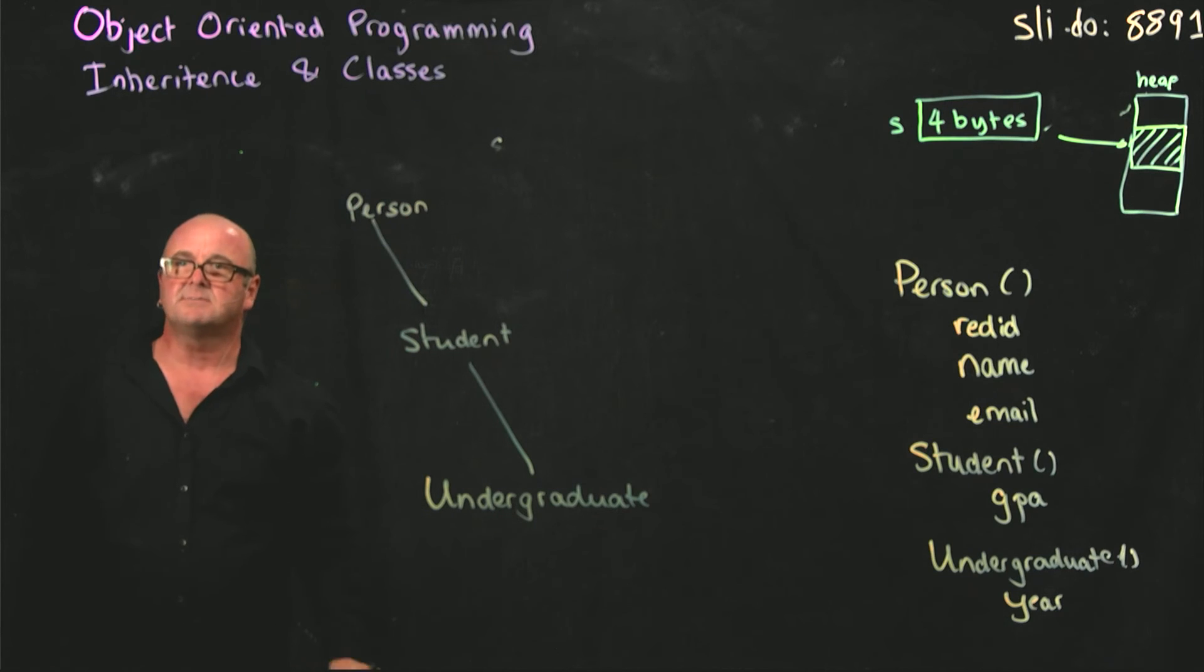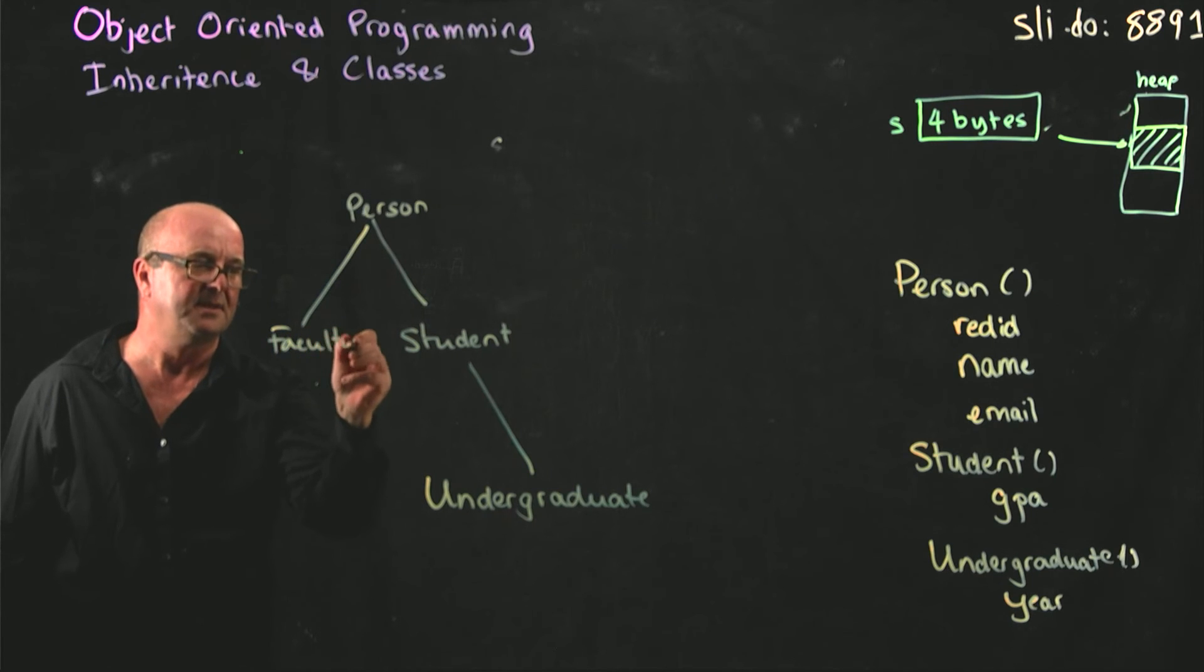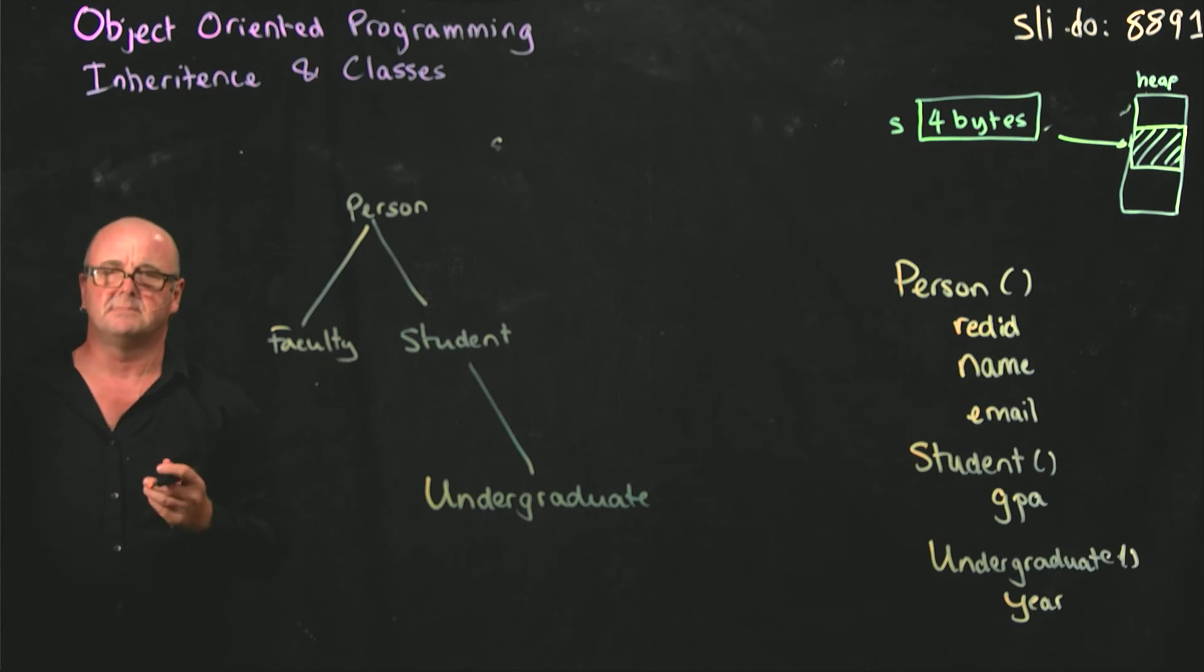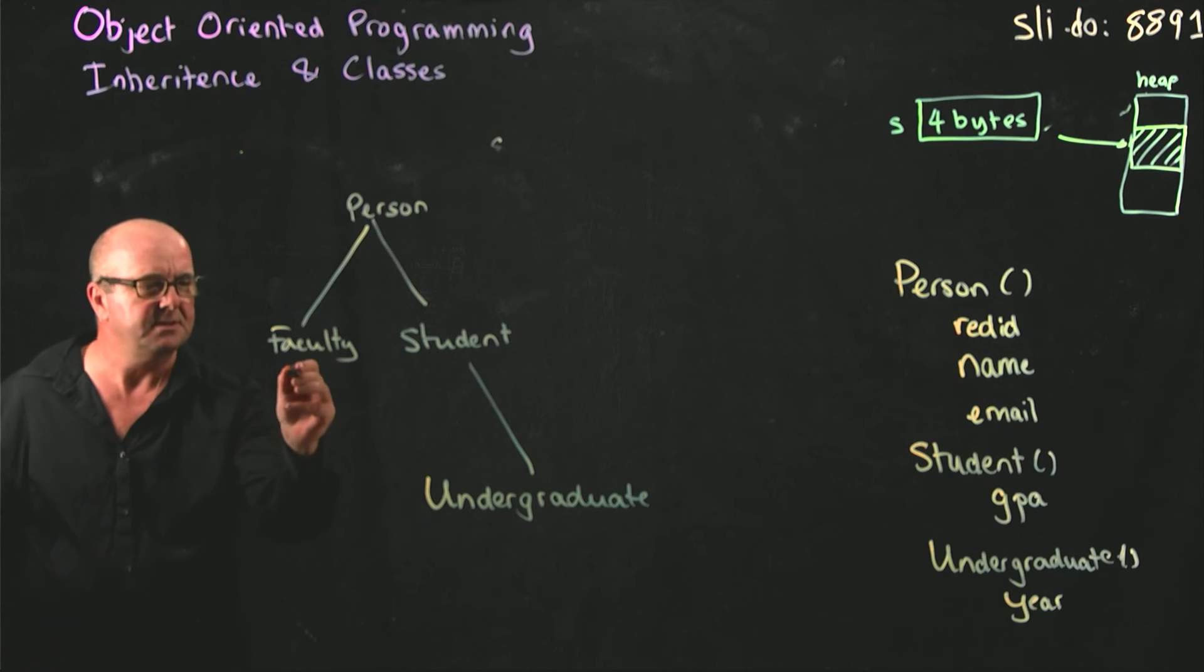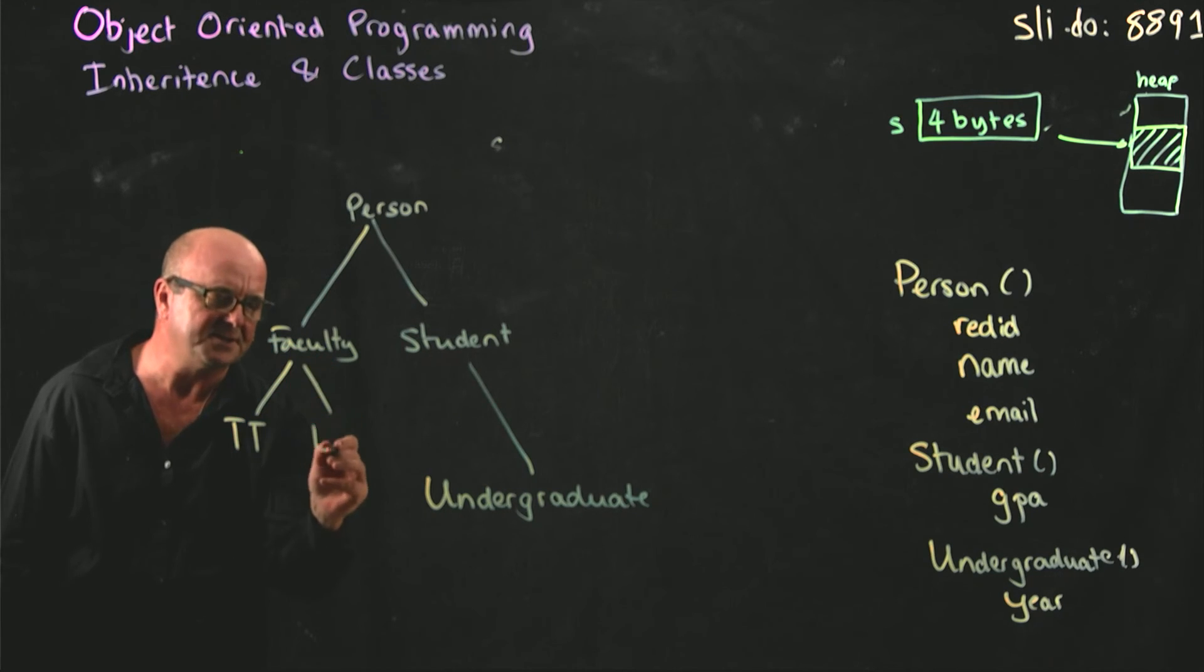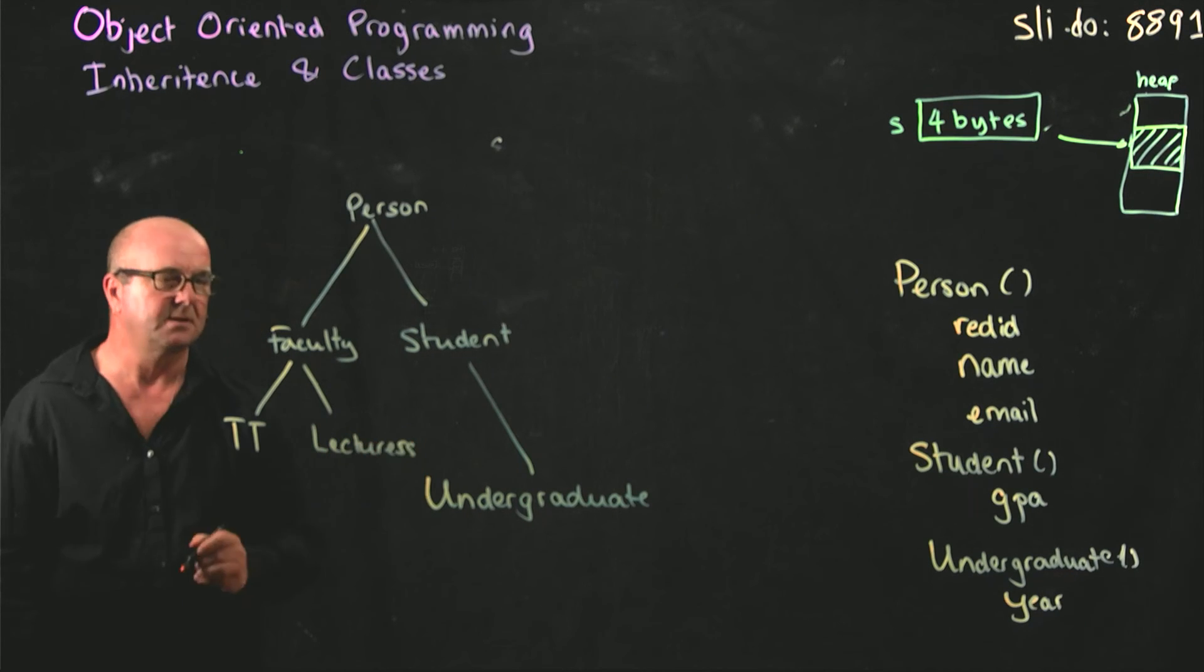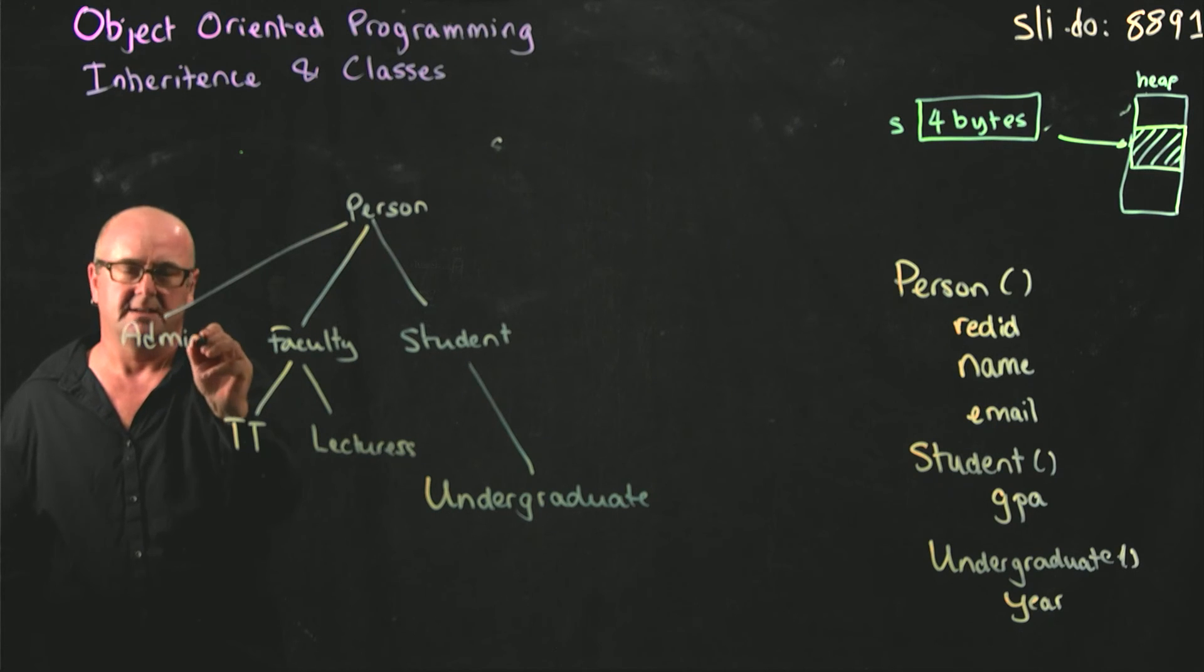And as we talked about at SDSU, we also have faculty, who are mostly people. Some of them are robots. No, no, I'm just kidding. We may have tenure track faculty, and maybe we have lecturers. We also have administration. Definitely not people.